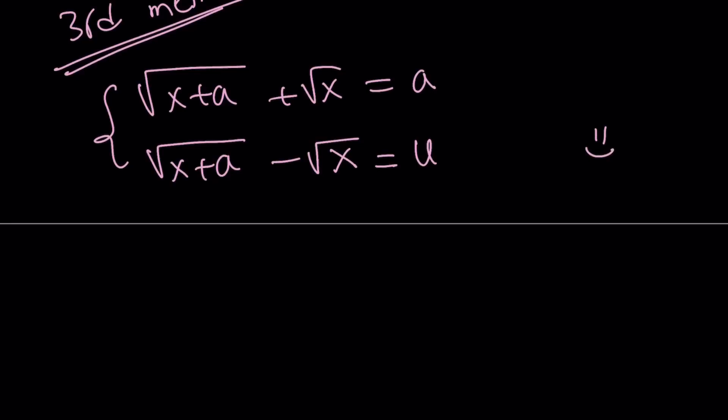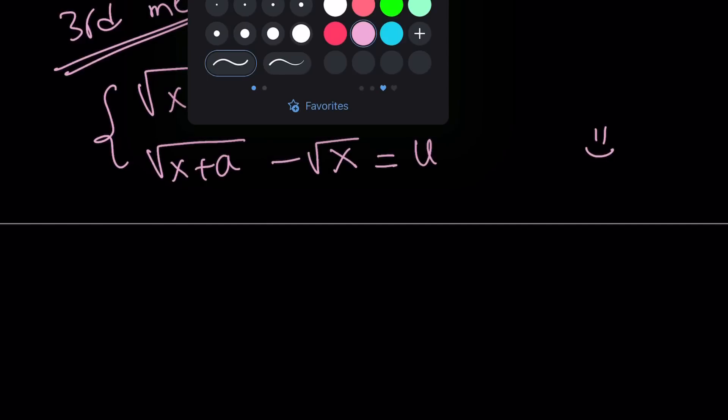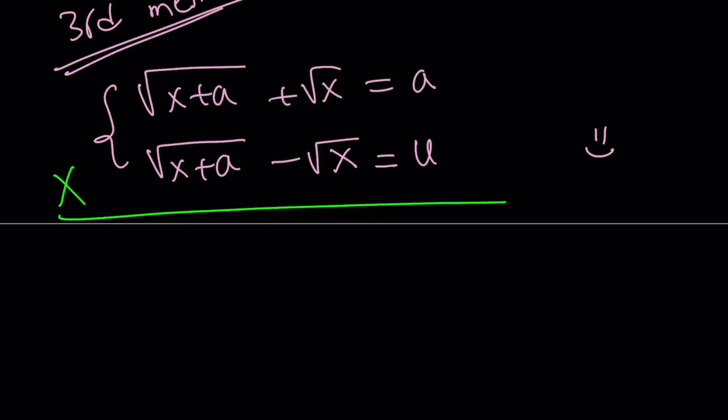So these expressions are conjugates. Isn't that beautiful? So let's go ahead and multiply them. When you multiply two conjugates, you get the difference of two squares. Square root of x plus a squared, which is x plus a, minus square root of x squared, which is x equals a times u, which is au. Alright. And then x cancels out.